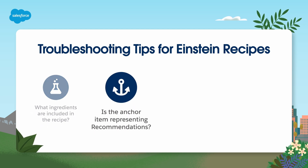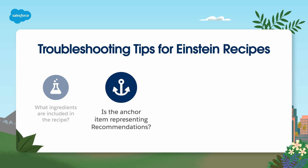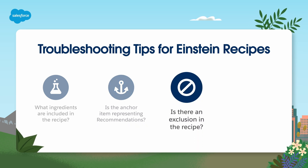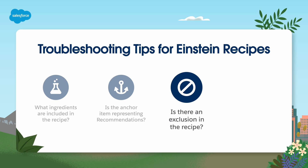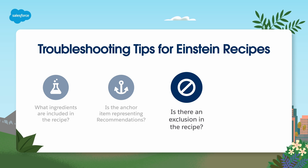Is the anchor item representing recommendations? If you create the recipe with an ingredient that requires an anchor item, the recipe training could lack enough data for that anchor item. Is there an exclusion in the recipe? Exclusions always override inclusions, so if there's a conflict, the exclusion always wins. Check for conflicting exclusions and inclusions that prevent the recipe from suggesting recommendations.